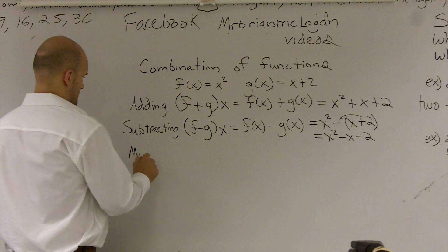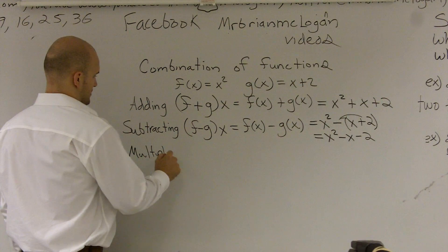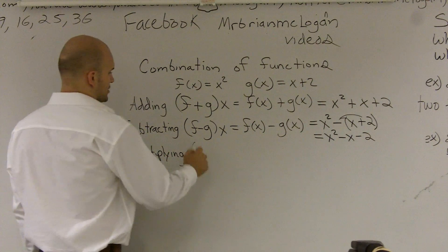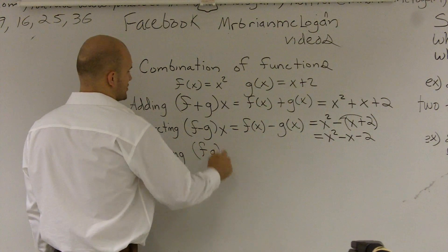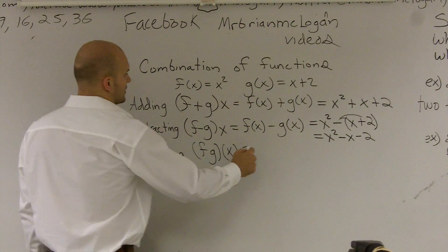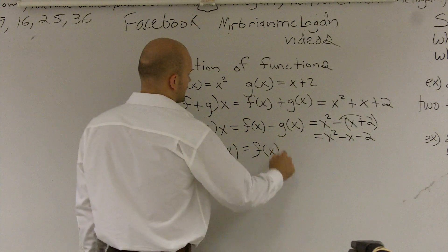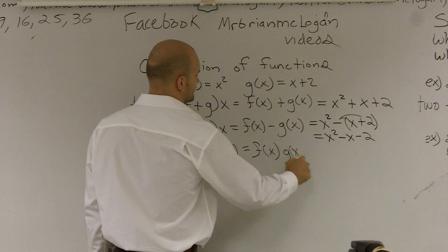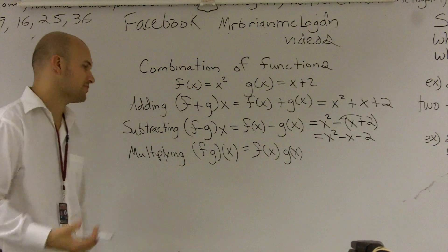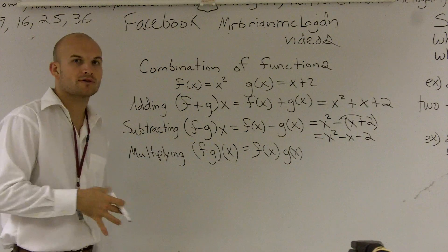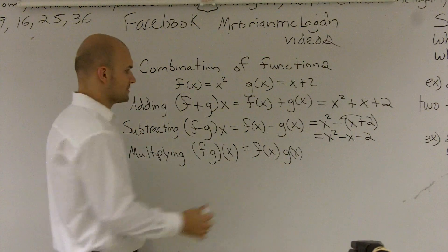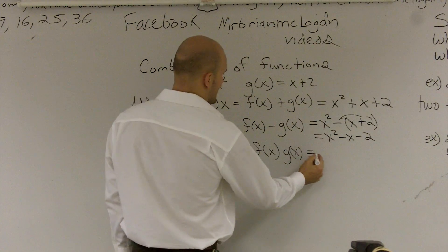So this will look like f times g of x equals f of x times g of x. It's pretty simple. It's just going through the same motions. But we're going to learn one more thing that's going to be composition. I'll kind of change it up.